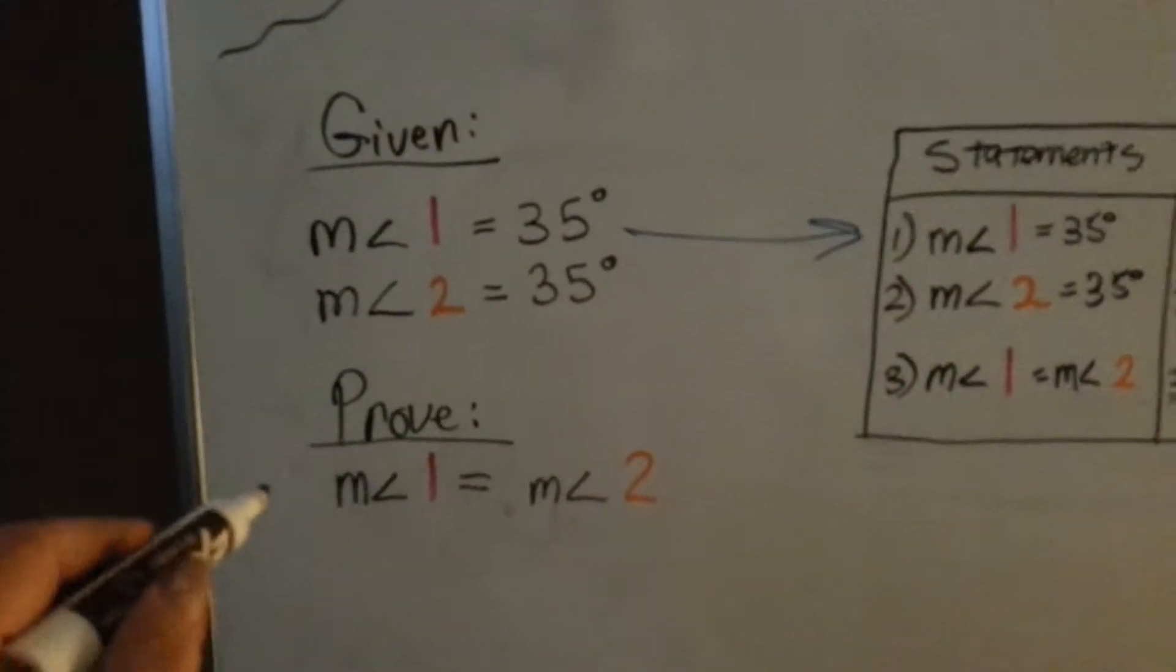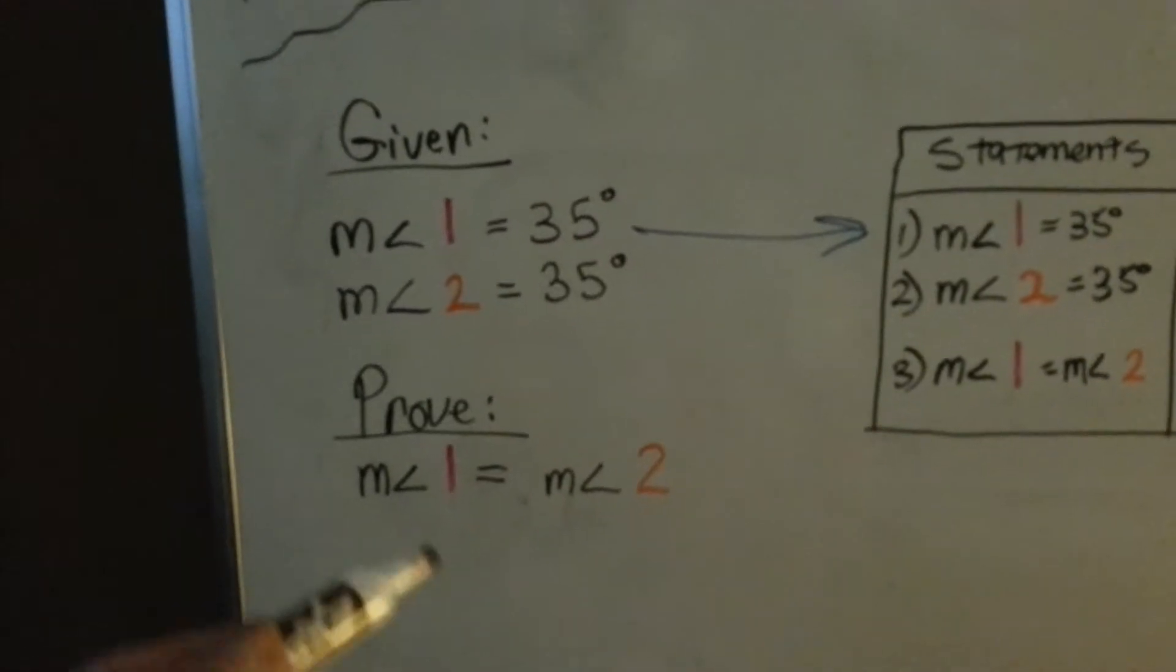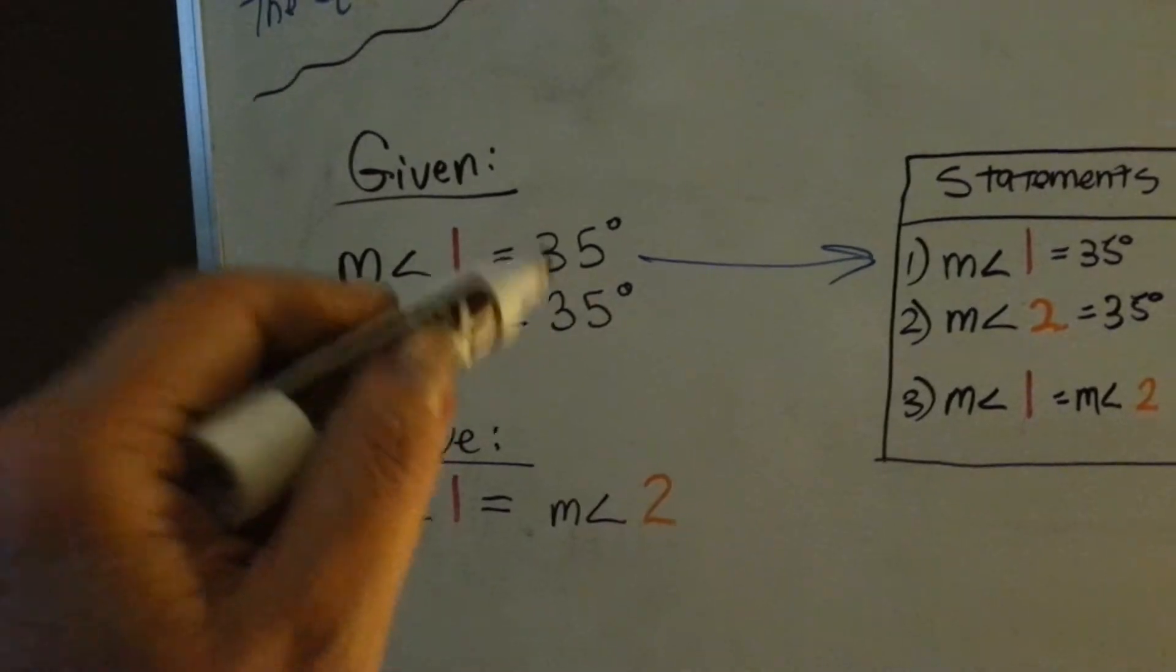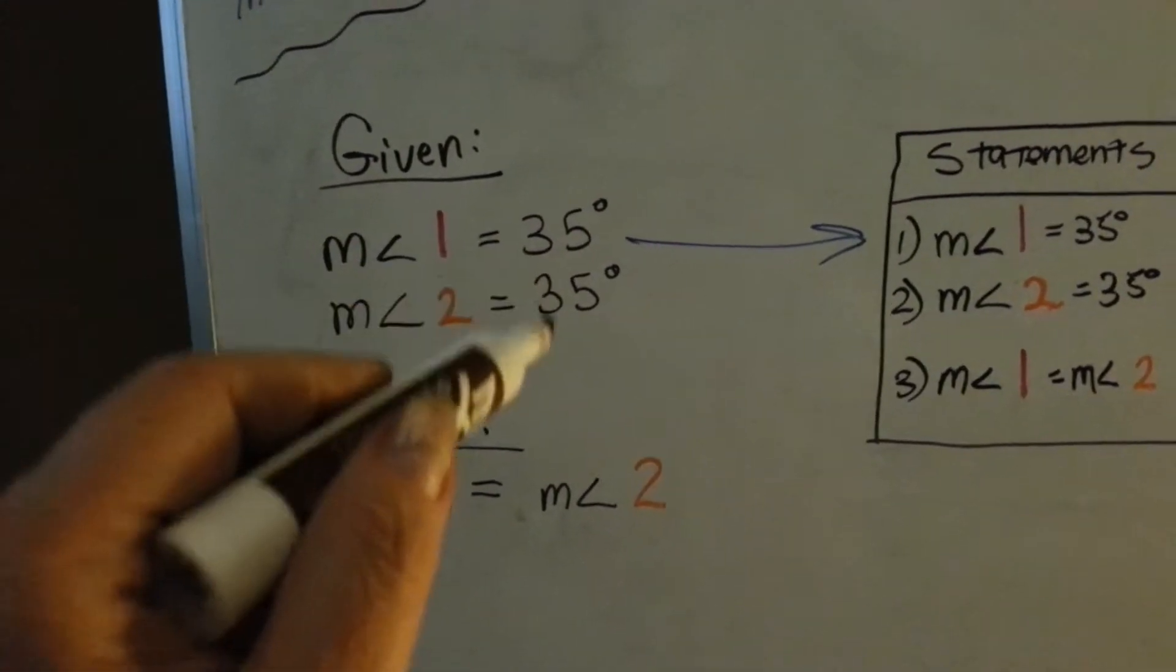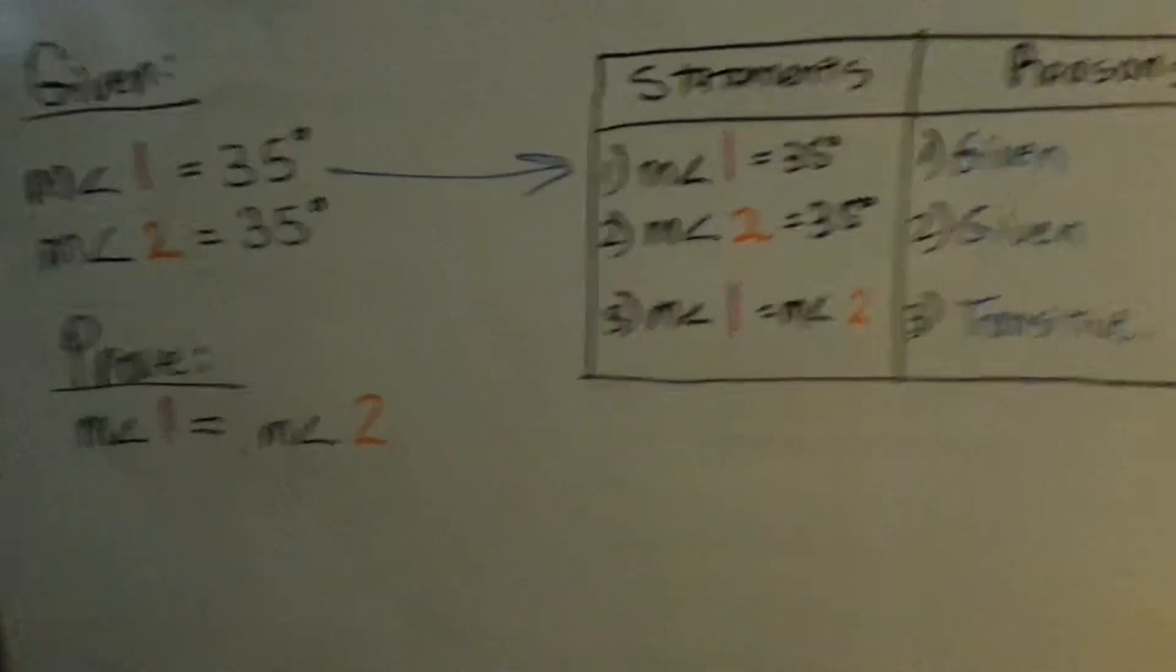They want us to prove that the measure of Angle 1 is equal to the measure of Angle 2. Well, it's kind of silly because they just told us that they were both 35 degrees. But just because they're both 35 degrees does not prove that they're equal to each other. That's what they're trying to tell us. I know it's silly, but here we go.